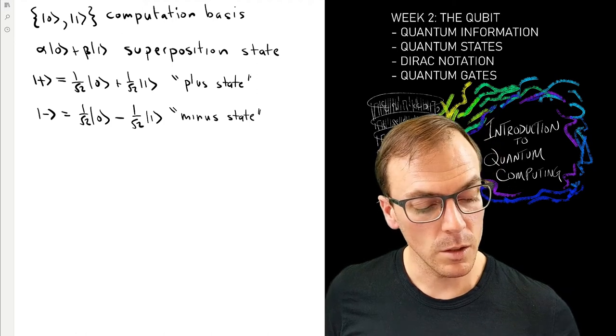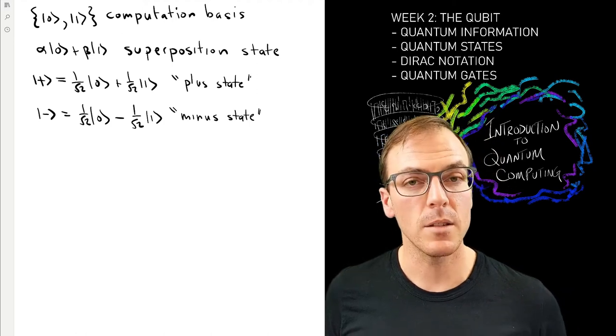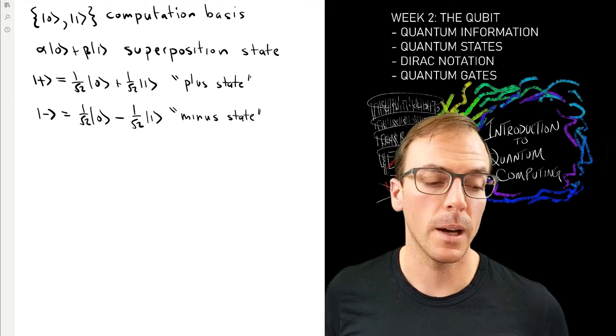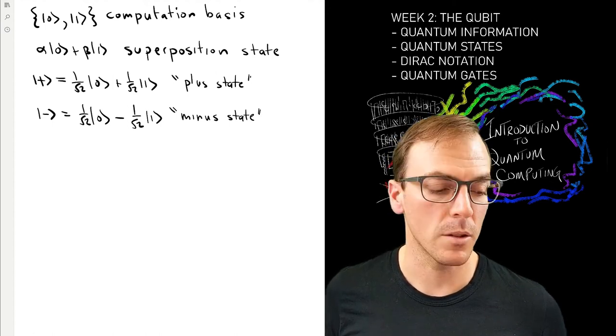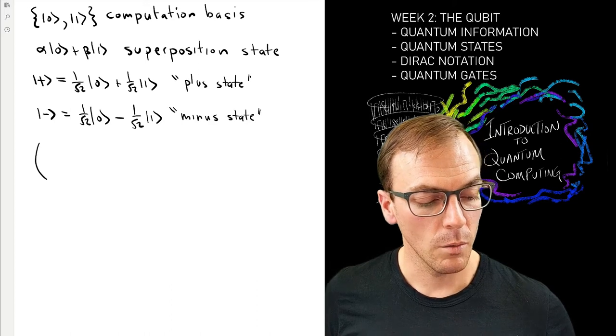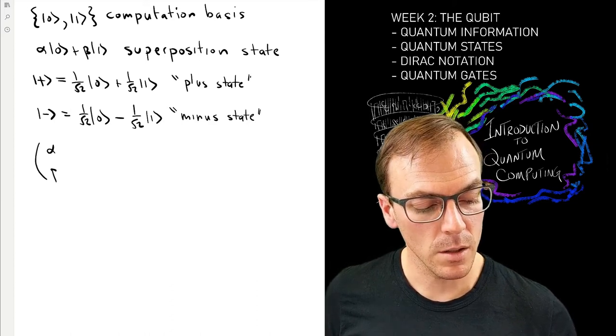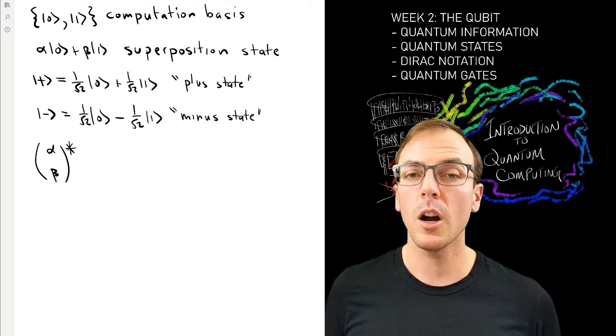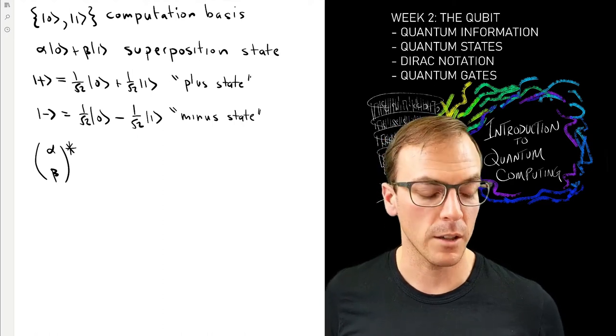One of the other things we do in linear algebra is transpose these vectors and later on matrices. When we're looking at complex numbers, we often take the complex conjugate of each of the elements of the vector as we transpose.